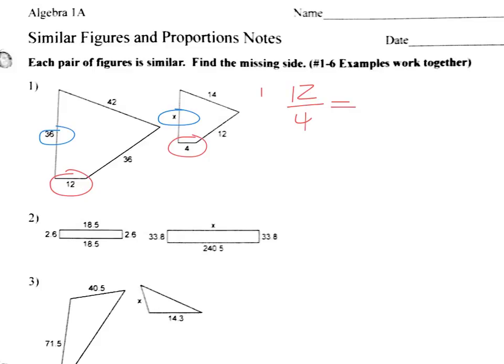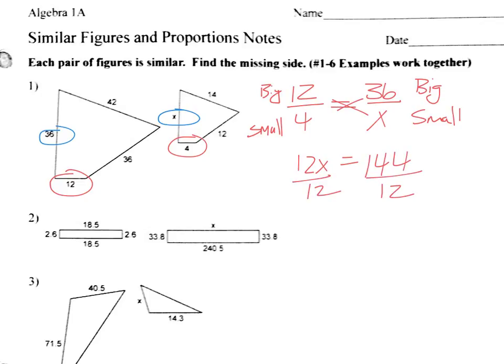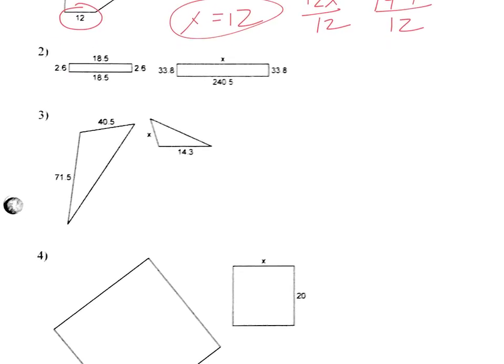Now what we've done is big over small - I did the big figure measurement over the small figure measurement on this side. We've got to do the same thing big over small. So in the big figure it measures 36, and the small one is X. Then we just cross multiply: 12 times 36 is 144, then we divide by 12 and we get X equals 12.